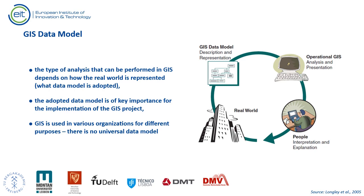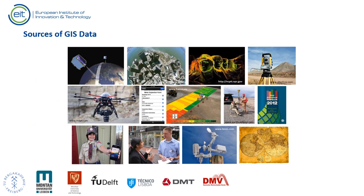We must be aware that geographic reality is generally infinitely complex while computer representation of reality is finite. Therefore, the data model selected influences the methods of analysis that can be done, and there is no single universal data model since GIS are used for different purposes by different people and organizations. Data collection is one of the most time-consuming and expensive tasks in GIS — it can cost up to 85% of total GIS costs. The sources of data are diverse and there are many methods to enter data into a GIS database.